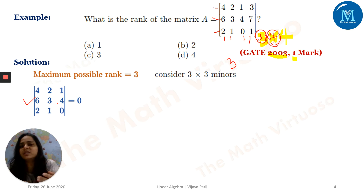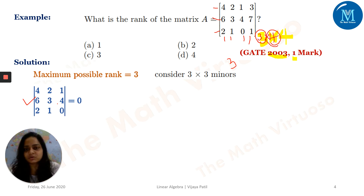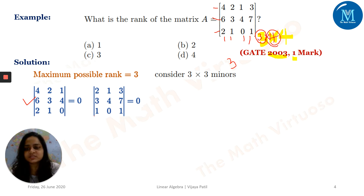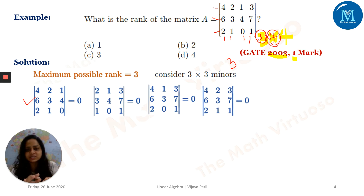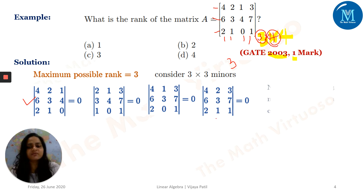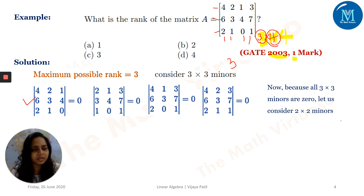The next minor is the one with elements 2, 1, 3 / 3, 4, 7 / 1, 0, 1 — again the determinant comes out to be zero. The next one is also zero, and the next is also zero. Please check these on your own by pausing the video.